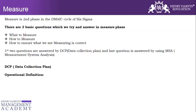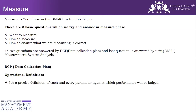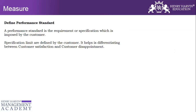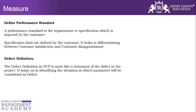In the Measure phase of Six Sigma, it is very important to capture the correct operational definition of the project Y. An operational definition is a precise definition of each and every parameter against which performance will be judged — it removes ambiguity so that everyone has the same understanding. Next is defining the performance standard, followed by the requirement or specification imposed by the customer. Specification limits are defined by the customer and help differentiate between customer satisfaction and customer disappointment. The third part is the defect definition — a statement of the defect in the project — which helps identify the situation in which a parameter will be considered a defect.